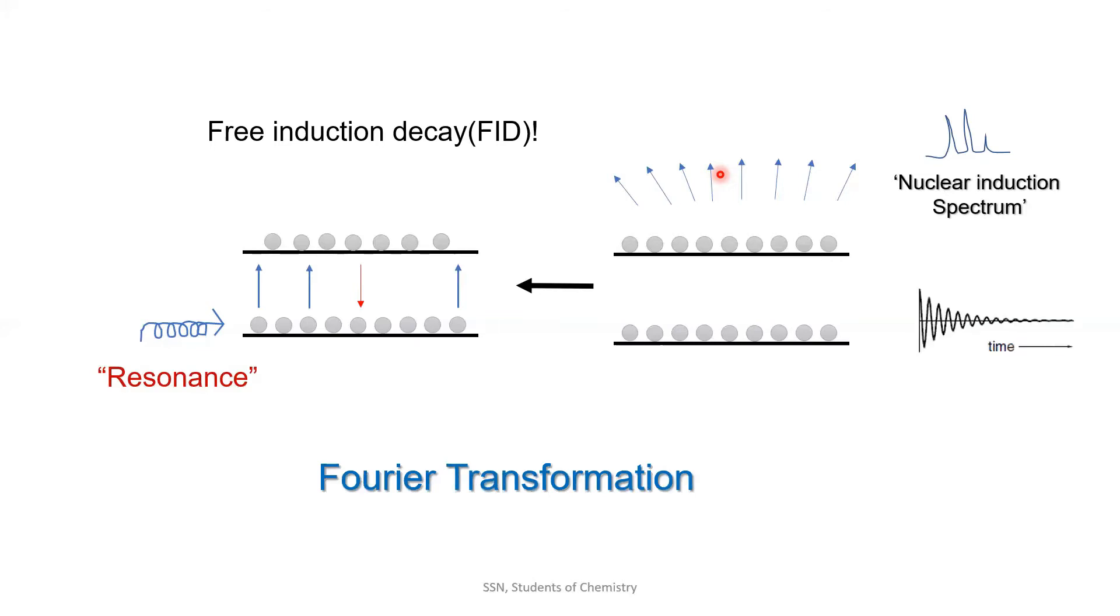This is our FID, which is known as free induction decay. It decays with time. If we apply Fourier transformation to this FID, then we would get a spectrum with frequency domain. Let us see how this happens in this video.